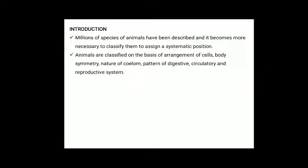Introduction: millions of species of animals have been described and it becomes more necessary to classify them to assign a systematic position. Animals are classified on the basis of arrangement of cells, body symmetry, nature of coelom, and pattern of digestive, circulatory and reproductive system.